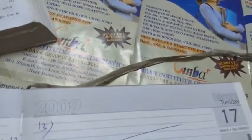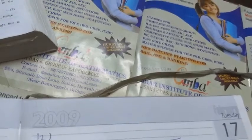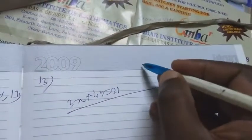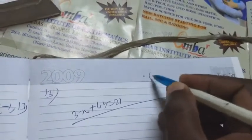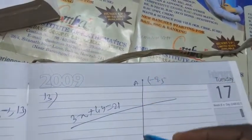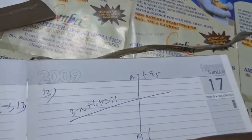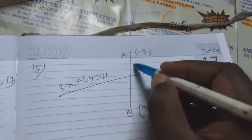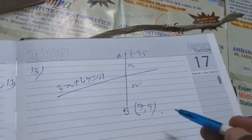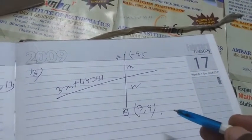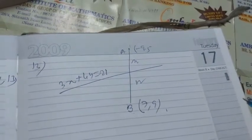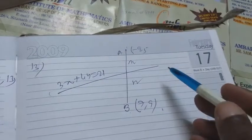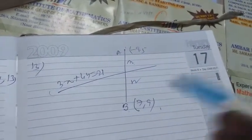The straight line equation is 3x + 4y = 21. Let point A be (-9, 5) and point B be (7, 9). Assume the line divides AB internally in ratio m:n. If the ratio m:n comes out positive, the division is internal; if negative, the line divides externally.